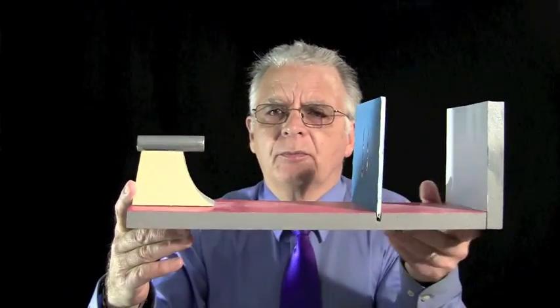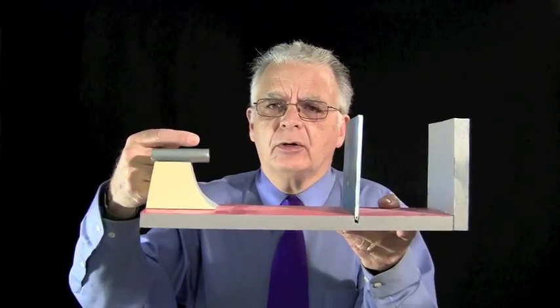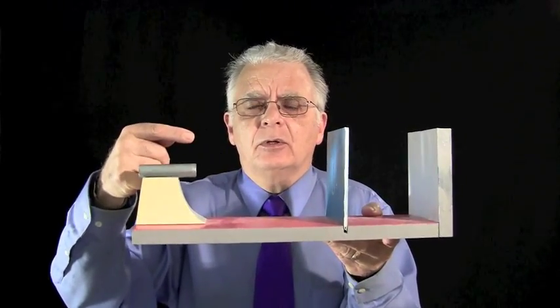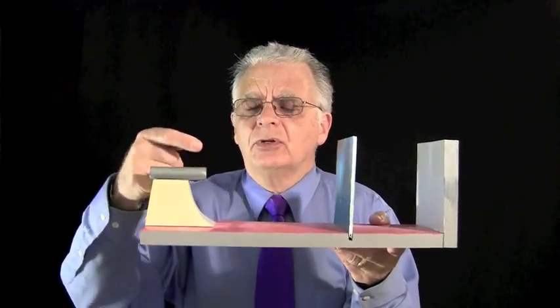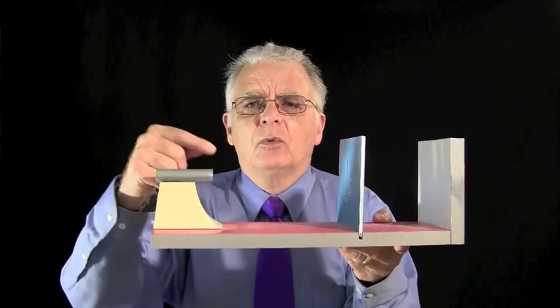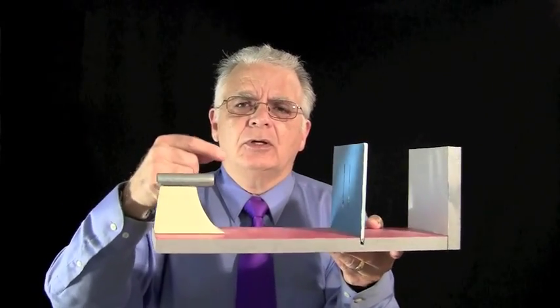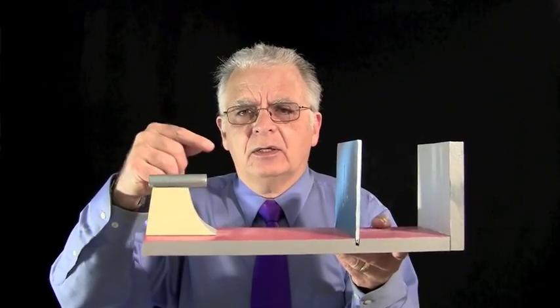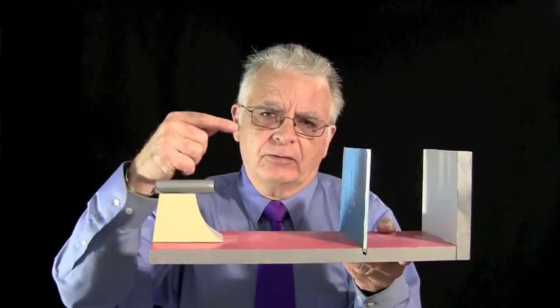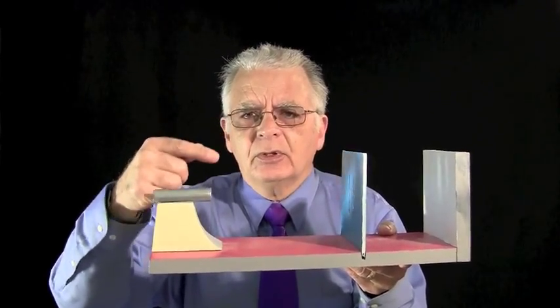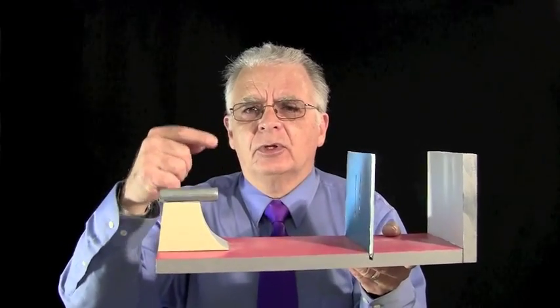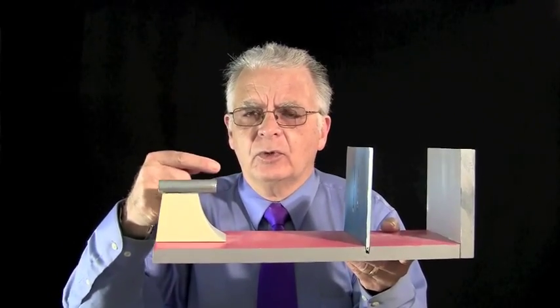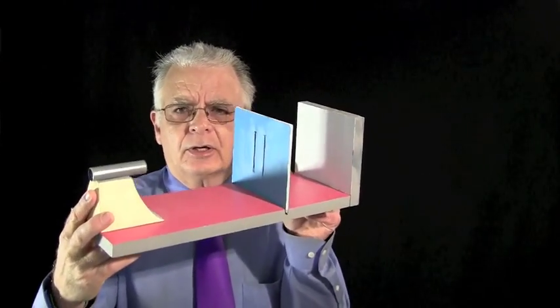In the double slit experiment, according to quantum mechanics, there are no waves and no interference prior to the emission of an electron. Once an electron is emitted, it is a wave packet, also known by Feynman as a probability amplitude, but it only comes into existence with the electron.